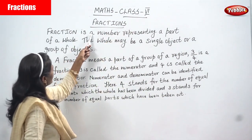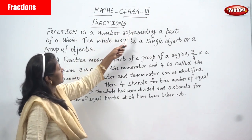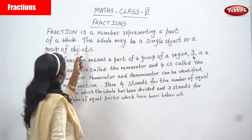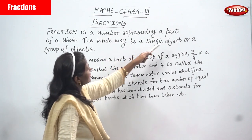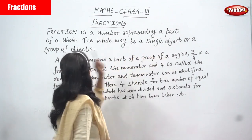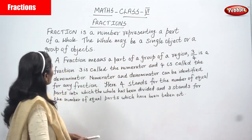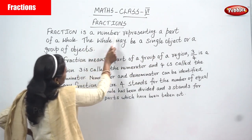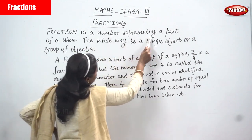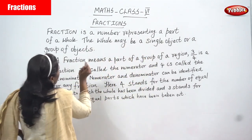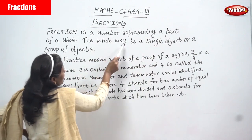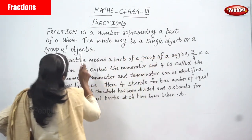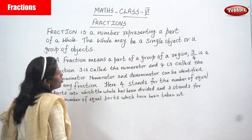Fraction is a number representing a part of a whole. The whole may be a single object or a group of objects. Fraction is a number representing a part of a whole. The whole may be a single object or a group of objects.